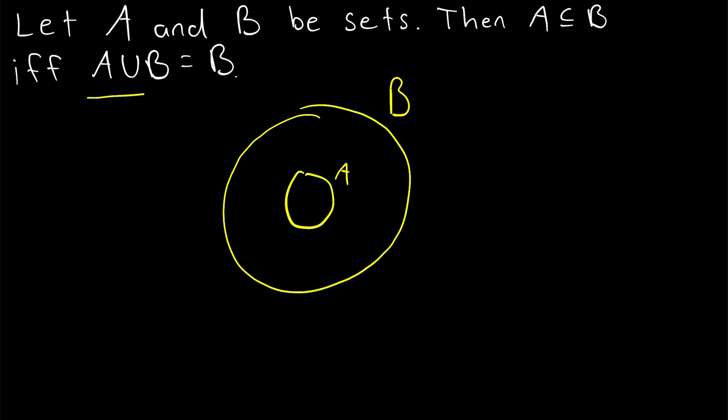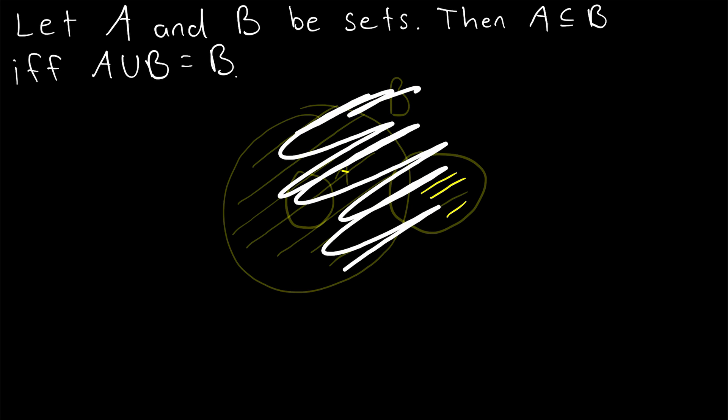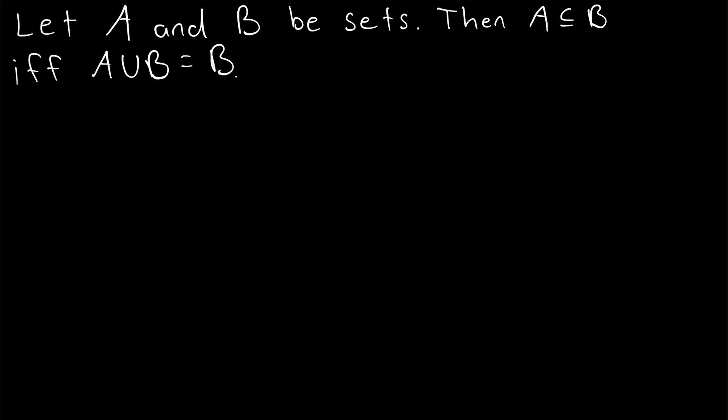Conversely, if when we union B with some set A, we're just left with the set B, then it must be the case that A is a subset of B. Otherwise, we would have got some new elements that aren't in B. But nothing is more convincing than a proof, so let's go ahead and jump into the proof.